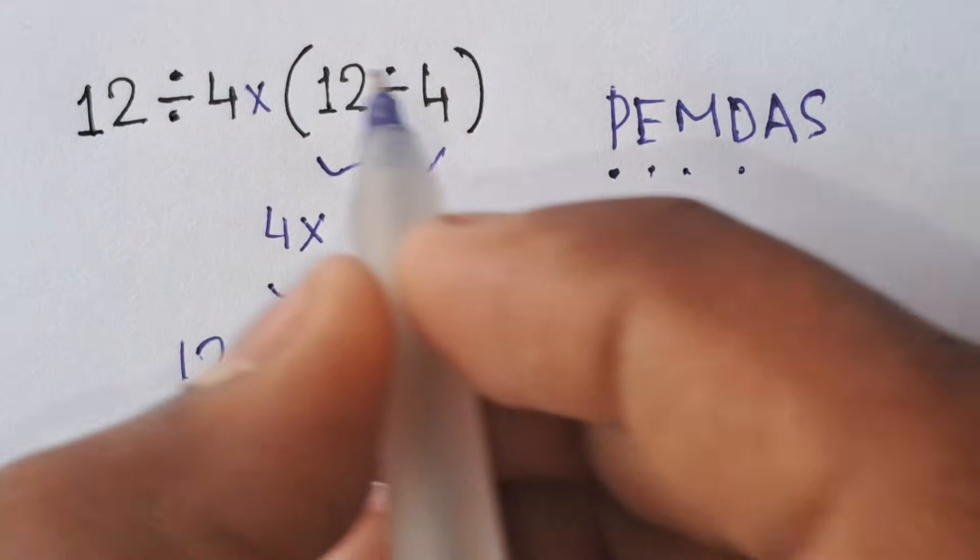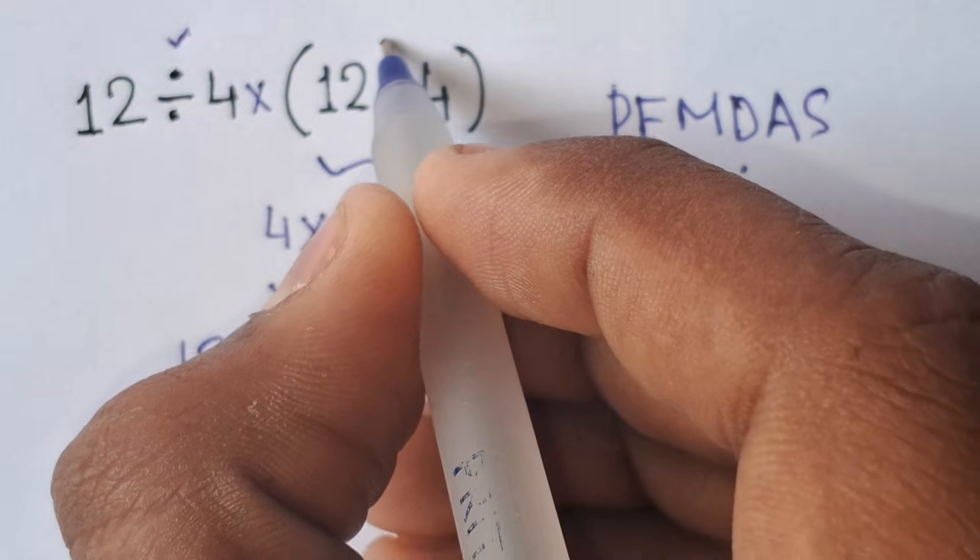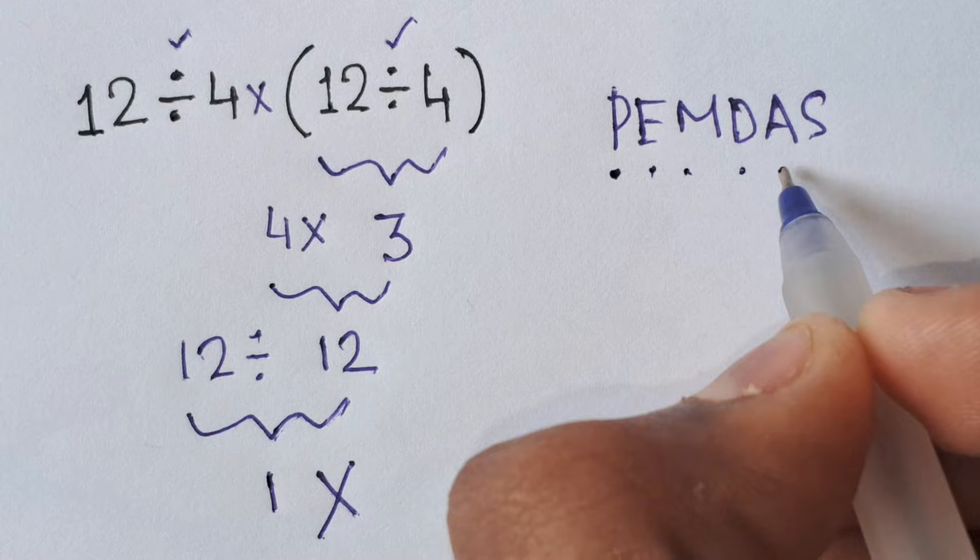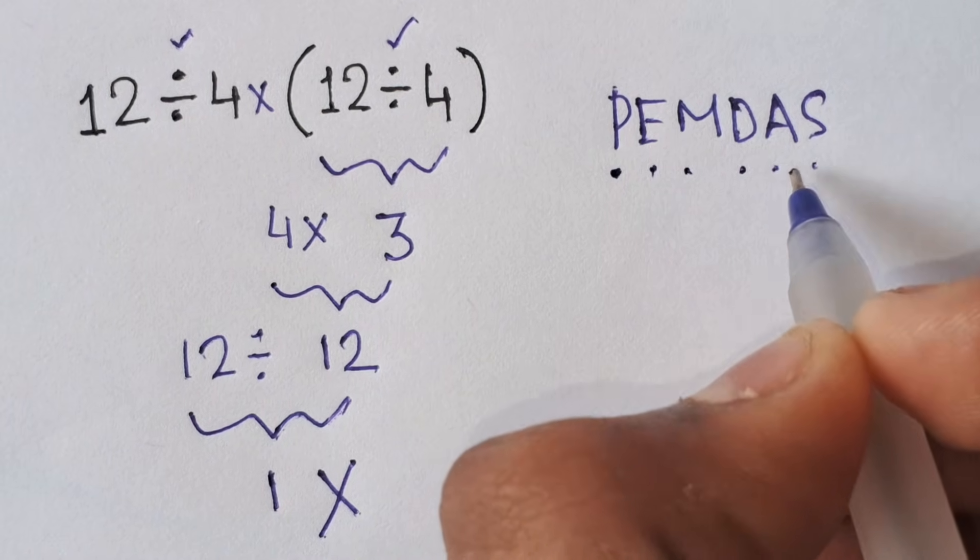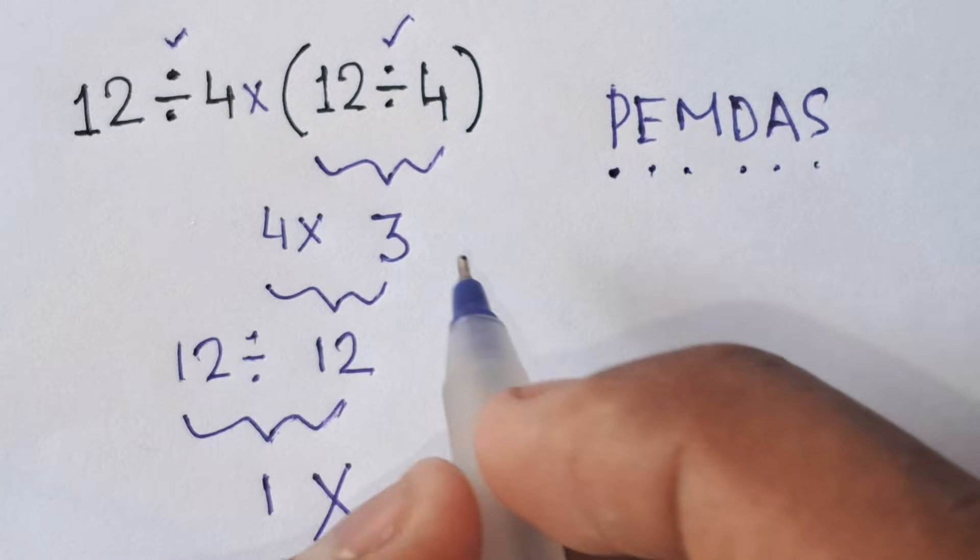D stands for division - here we have one division and another division inside the parentheses. A stands for addition and S stands for subtraction - we have no addition or subtraction in the expression. So first we have to solve these parentheses.